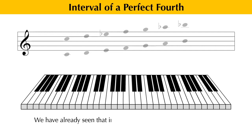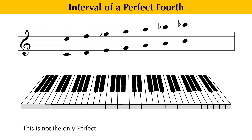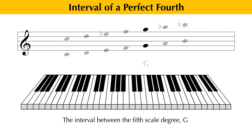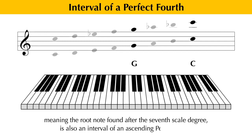We have already seen that in both a C major and C minor scale, an interval of a perfect fourth above the note C is the note F. However, this is not the only perfect fourth interval which occurs within those scales. The interval between the fifth scale degree G and the octave of the first scale degree C, meaning the root note found after the seventh scale degree, is also an interval of an ascending perfect fourth.